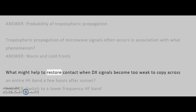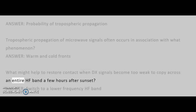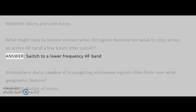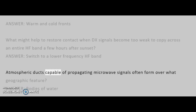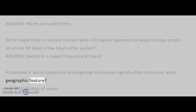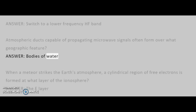What might help to restore contact when DX signals become too weak to copy across an entire HF band a few hours after sunset? Answer: switch to a lower frequency HF band. Atmospheric ducts capable of propagating microwave signals often form over what geographic feature? Answer: bodies of water.